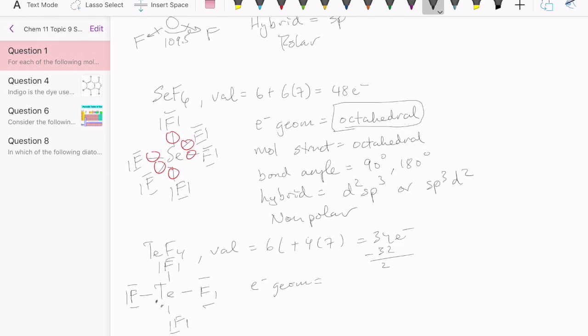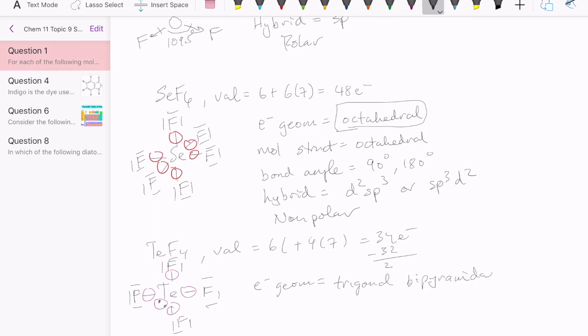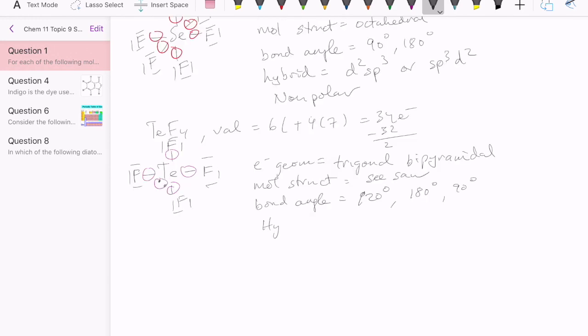The electron geometry is going to be five pairs of electrons in this case. One, two, three, four, five, which means trigonal bipyramidal using VSEPR. The molecular structure is four pairs bonding, one lone pair. That's a seesaw. Then the bond angle. It's actually quite a few bond angles here that's going to exist. So we're going to have 120 and then 180 degrees and also 90 degrees. Hybrid orbital depends on the electron geometry. In this case, we have trigonal bipyramidal. That means dsp3 or sp3d.